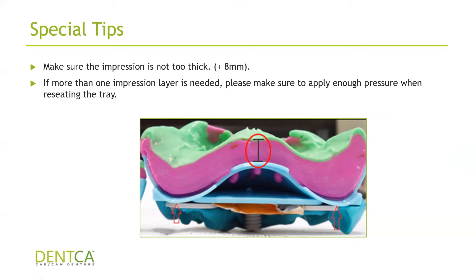Ideally the impression material should be about four millimeters thick — five, maybe six — but you don't want to go over eight millimeters. The reason is that the thicker your material is, the lower that plate at the bottom of the tray is going to end up, which means you're going to have less vertical space to do your other movements such as VD measurement and CR measurement. So always look out for material thickness.